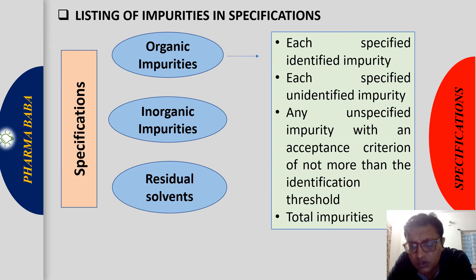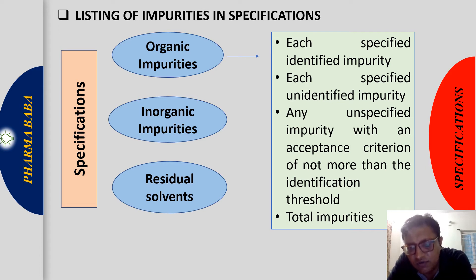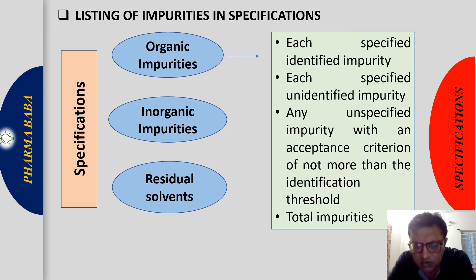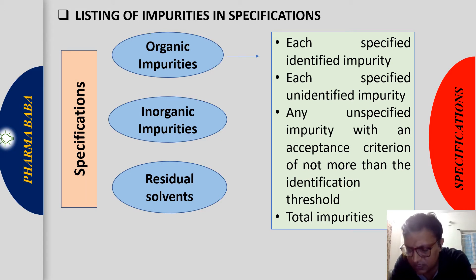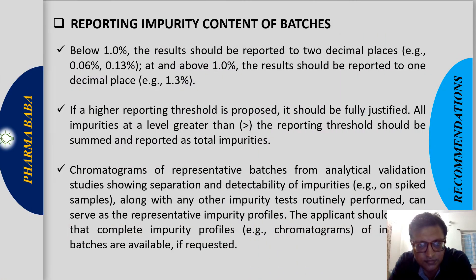Each specified unidentified impurity — where you don't know the structure but it is above the reporting threshold — should be reported. Any unspecified impurity with an acceptance criteria of not more than the identification threshold should also be present in the specification. Total impurities, the summation of all impurities, should also be part of the control strategy for organic impurities.